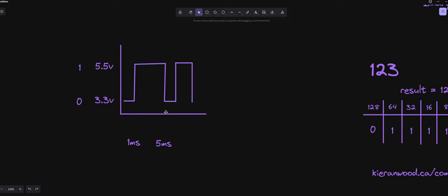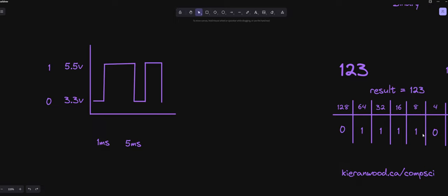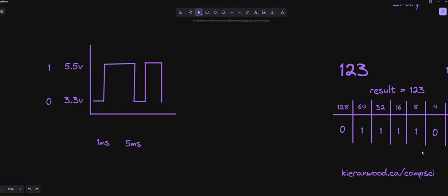And so this right here is our number from earlier. So if we go ahead and take a look at this, we start with 3.3 volts, which is a zero, and then we do that for one millisecond. So what we do on the other side is we'd say, okay, every one millisecond is going to be one bit from our number. So the first millisecond, we're going to be at 3.3 volts, which is going to be a zero. Then, for the next four milliseconds here, we're going to be at 5.5 volts, which is all ones. So for the next four milliseconds up until five milliseconds, we're going to pass all of these ones as a voltage across the wire.